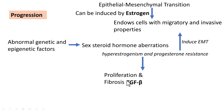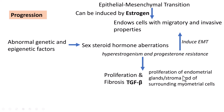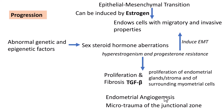Hyperestrogenism also results in proliferation of cells and fibrosis, typically brought about by TGF-beta (transforming growth factor beta), with proliferation of endometrial glands, stroma, and surrounding myometrial cells. It can also result in endometrial angiogenesis and micro-trauma of the junctional zone, resulting in more adenomyotic foci in the myometrium.